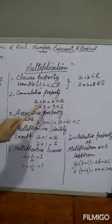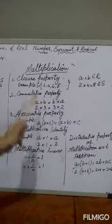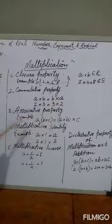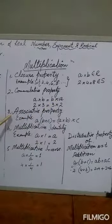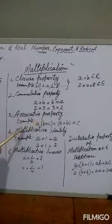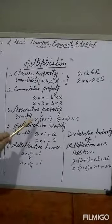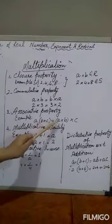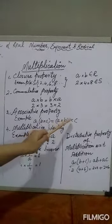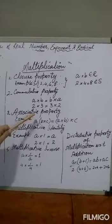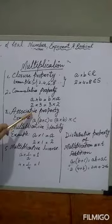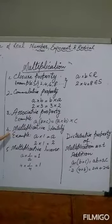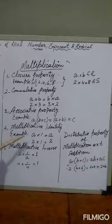Next is the commutative property for multiplication: A times B equals B times A. That is, if you multiply two real numbers and change their order, the product remains the same. Third is the associative property: (A times B) times C equals A times (B times C).